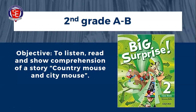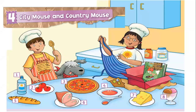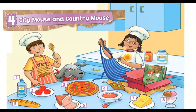Country mouse — cuando hablamos de country mouse, es un ratoncito de campo; country se refiere al campo. And city mouse es un ratoncito de ciudad. First, you have to open your book in page number 36. Ustedes tienen que abrir su libro en la página número 36. Everybody, open your book in page number 36.